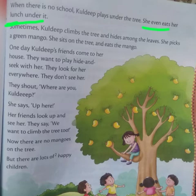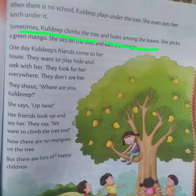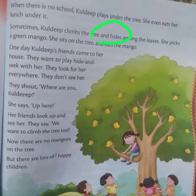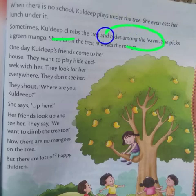Sometimes Kuldeep climbs the tree and hides among the leaves. Sometimes means kabhi kabhi. Hides means to keep secret — chupna or chupana, to conceal oneself. Climb means charhna. Where does Kuldeep eat her lunch when there is no school? Under the tree — because it is a big and shady tree.